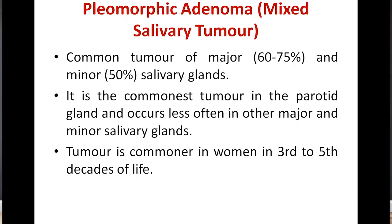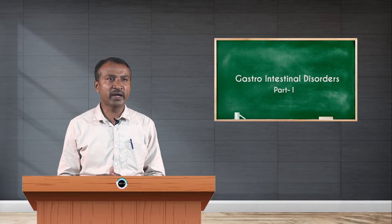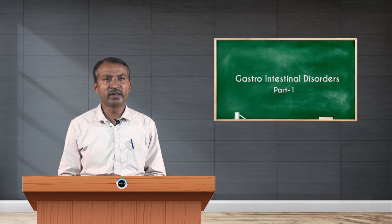There is a tumor mainly related to salivary glands called pleomorphic adenoma, also called mixed salivary tumor. It is the commonest tumor of major salivary glands, contributing nearly 60 to 75 percent of cases. Minor salivary gland involvement is 50 percent. It is the commonest tumor in the parotid gland and occurs less often in other major and minor salivary glands.